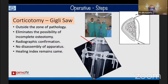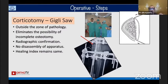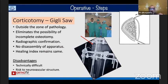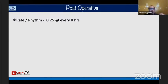Regarding the Gigli saw corticotomy — a low-energy osteotomy — this is my favorite technique, learned from Dr. Kothari during my fellowship. It is done preferably in the proximal tibia, outside the zone of pathology. It eliminates the possibility of incomplete osteotomy, provides a clean cut with radiographic confirmation, and requires no disassembly of the apparatus. The healing index remains the same. It does carry a risk to neurovascular structures if not done sub-periosteally, and it has a learning curve, but most of my residents are now performing it.